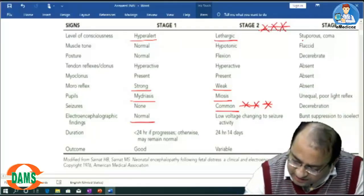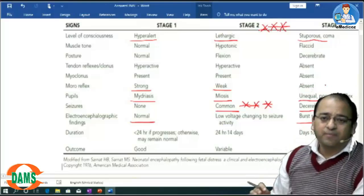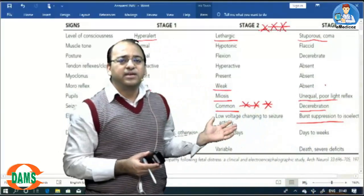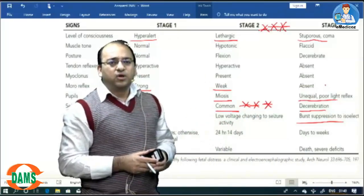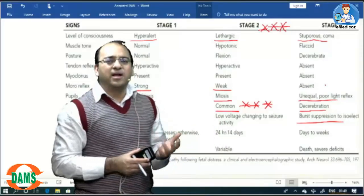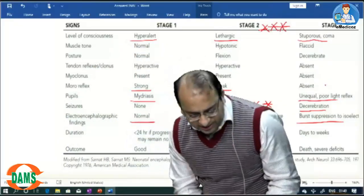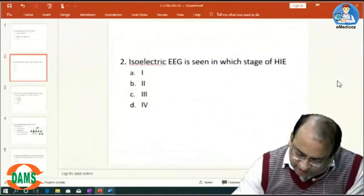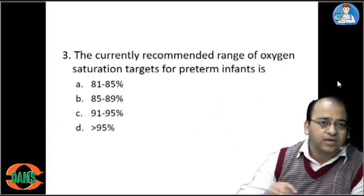Stage 3 is deep coma and has a very bad prognosis. In Stage 3 there is a burst suppression EEG or an isoelectric EEG. All patients show decerebrate posturing, pupils are dilated, and they are comatose. So the answer to this question — isoelectric EEG — is seen in Stage 3.